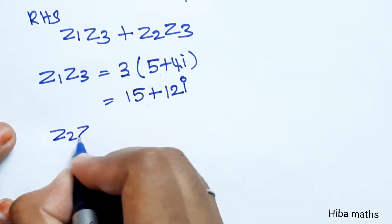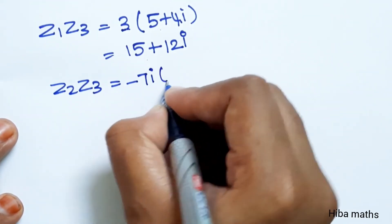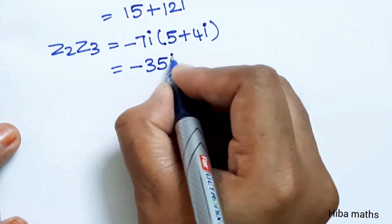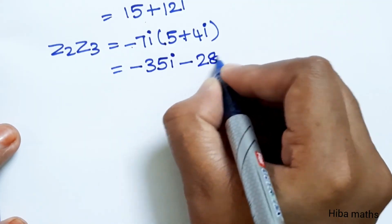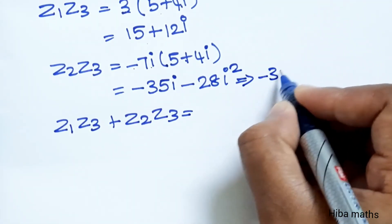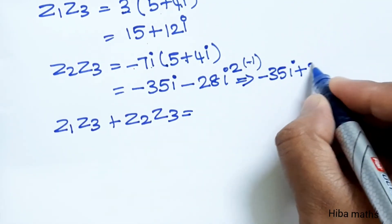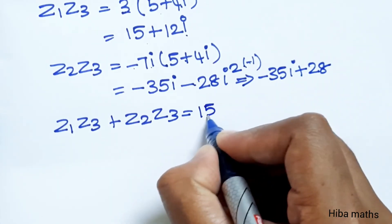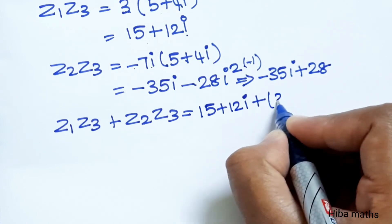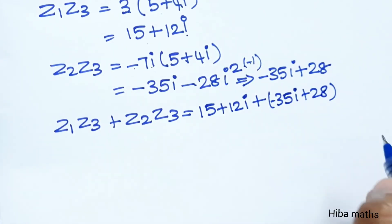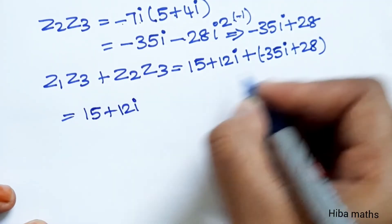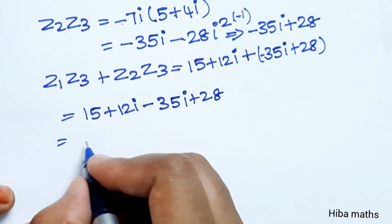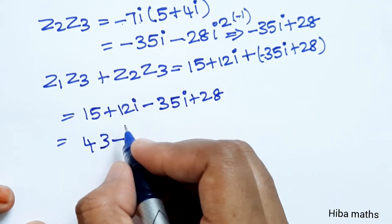Now z2 into z3 — z2 is minus 7i, z3 is 5 plus 4i. Expanding: minus 7i times 5 is minus 35i, minus 7i times 4i is minus 28i squared. Since i squared equals minus 1, minus 28i squared becomes plus 28. So combining: 15 plus 12i plus minus 35i plus 28. Adding real parts: 15 plus 28 is 43. Adding imaginary parts: 12i minus 35i is minus 23i.